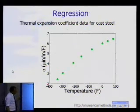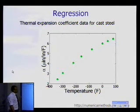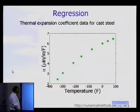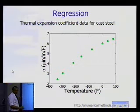Now, look at this example here. We are given the thermal expansion coefficient data for cast steel, and you are given the thermal expansion coefficient as a function of temperature. As you can see from the data points that are given to you, the thermal expansion coefficient decreases with a decrease in temperature.